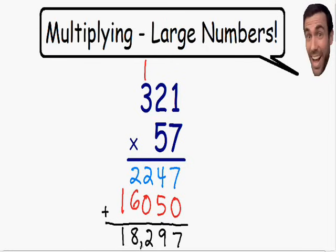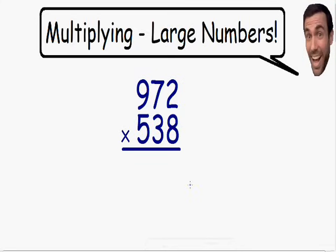I encourage you to check your answer with a calculator just to make sure we didn't make a careless mistake. But let's move on to an even harder example. Here we have 972 being multiplied by 538. Just like before, we want to multiply all the numbers on the bottom with all the numbers on top. We always start with the number in the bottom right, so we will start with this number 8. First we need to multiply this number 8 by this number 2 — 8 times 2 is equal to 16.